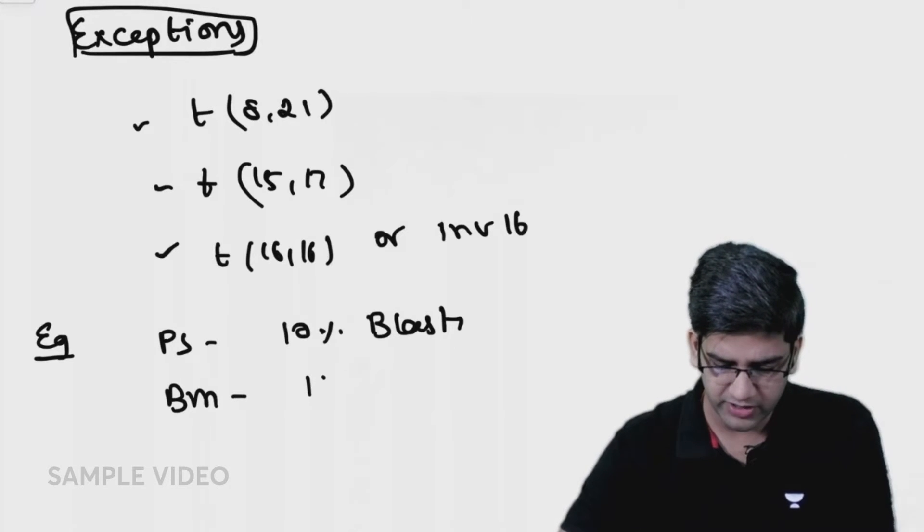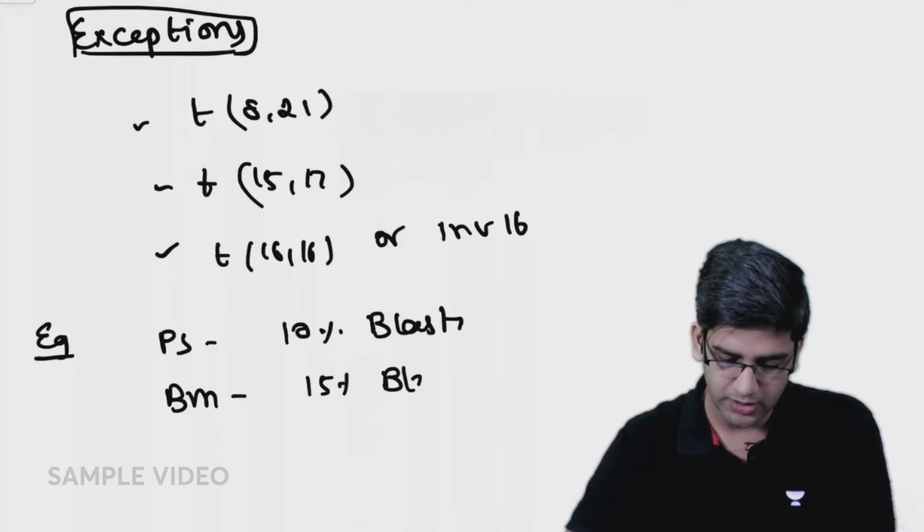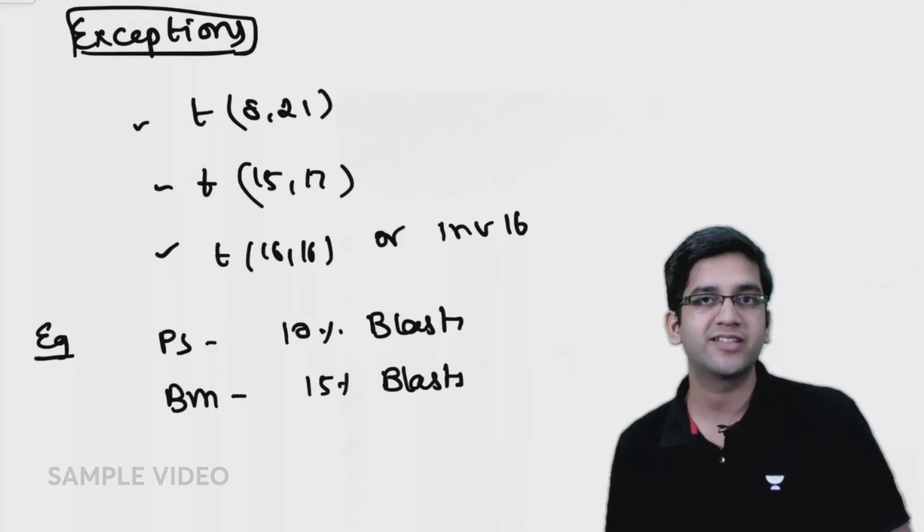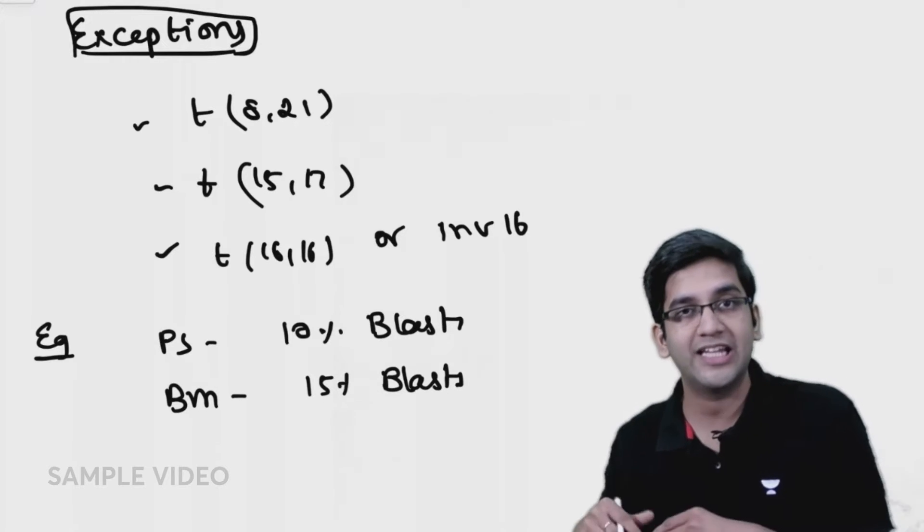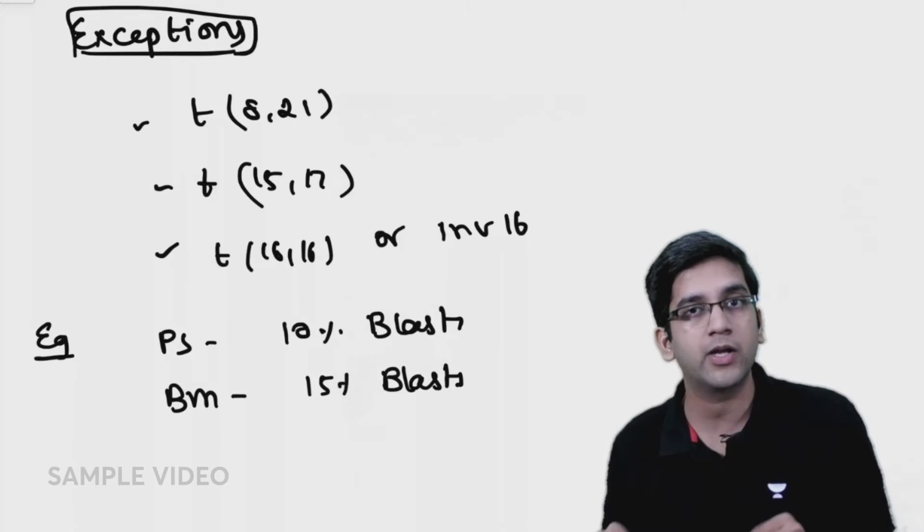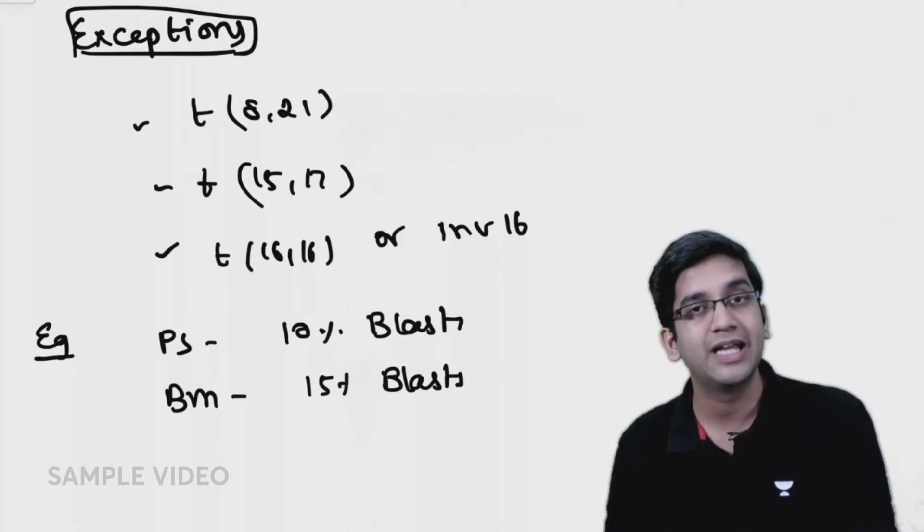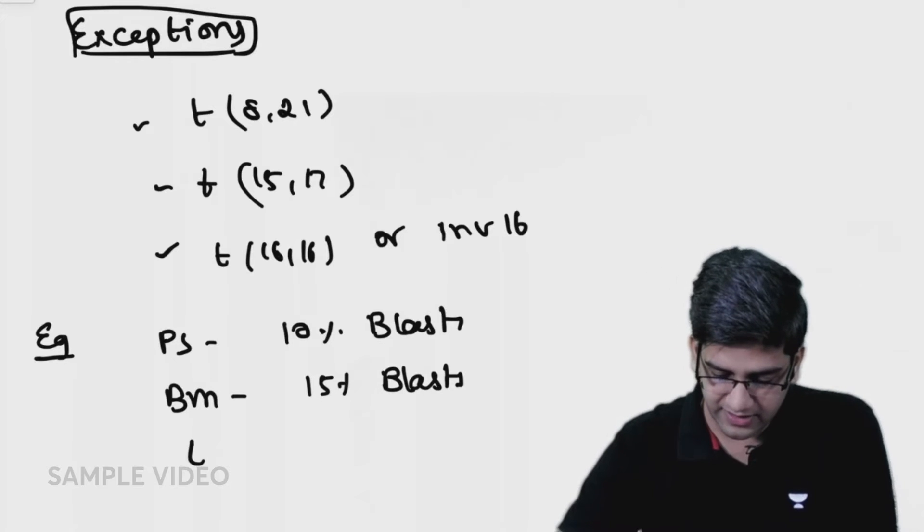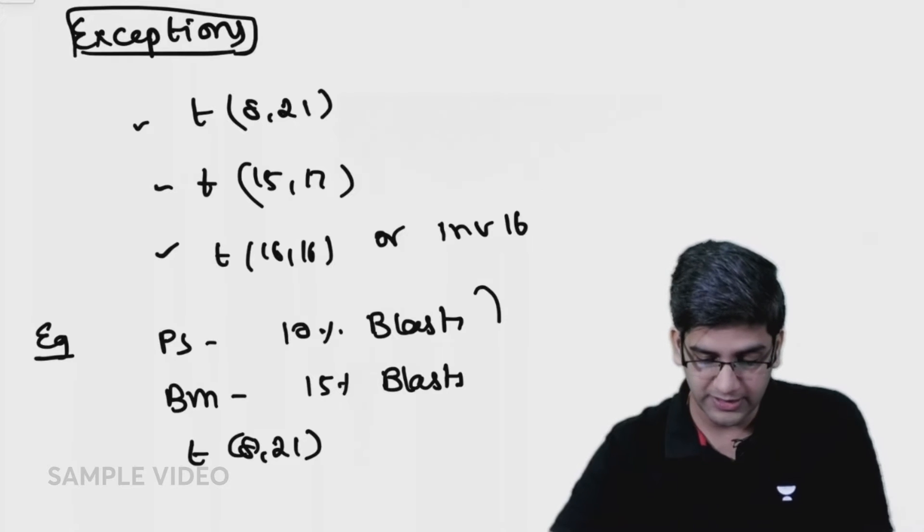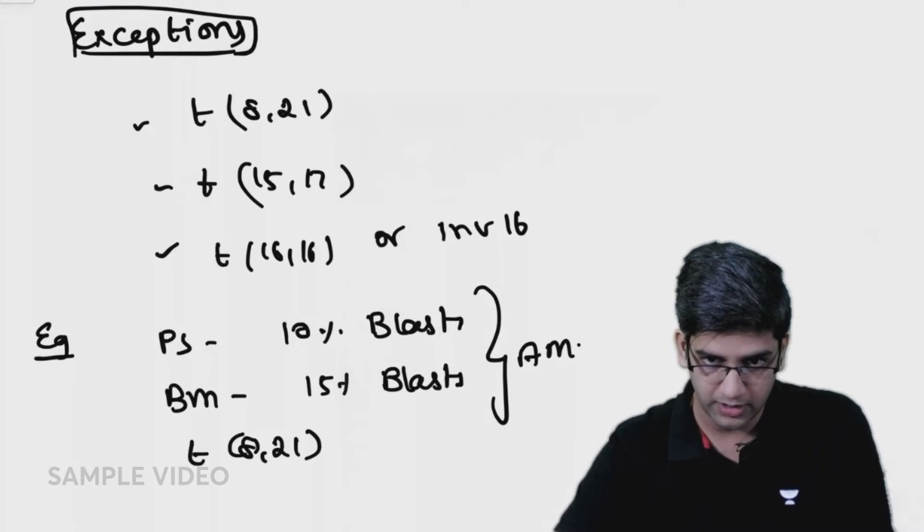Bone marrow showed 15% blasts. Can I call this acute myeloid leukemia? I cannot, because neither in peripheral smear nor in bone marrow do I have the 20% cutoff. At the same time, the patient's genetics was sent and translocation (8;21) was found.